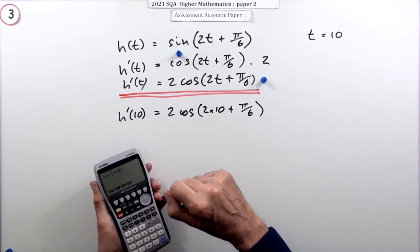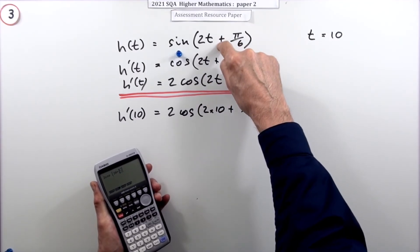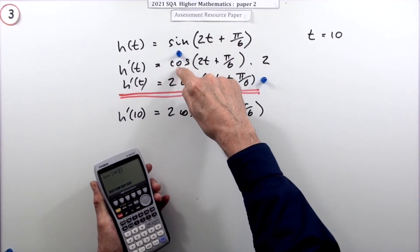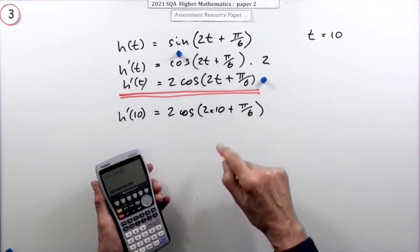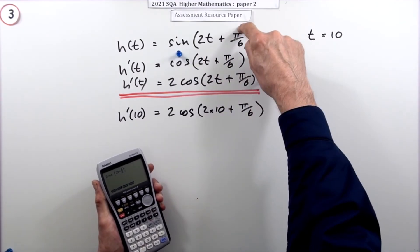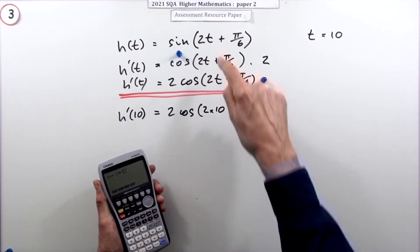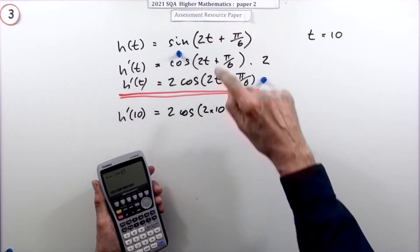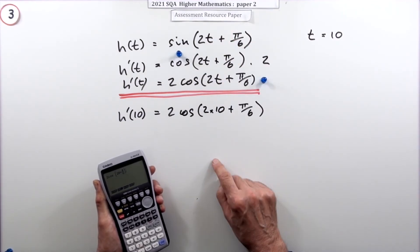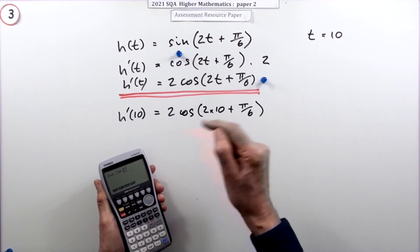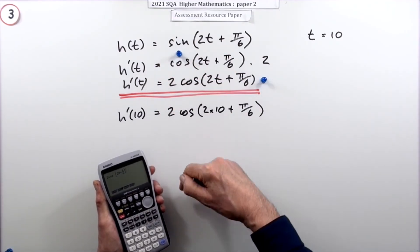One important thing to note: with differentiation and integration, angles must be in radians — the derivative is only defined this way in radians. You can tell it's in radians because of the π/6 and the absence of any degree signs, so make sure your calculator is set to radians.